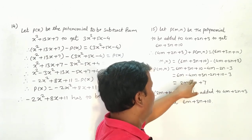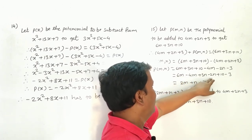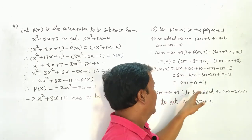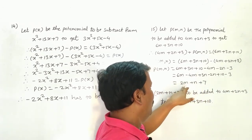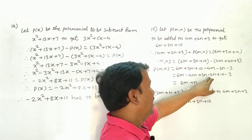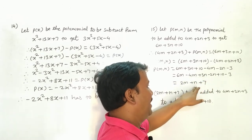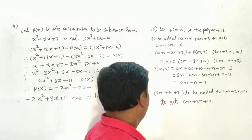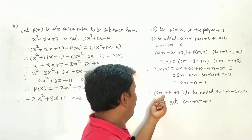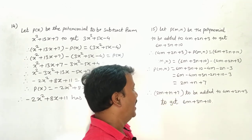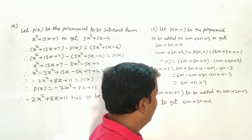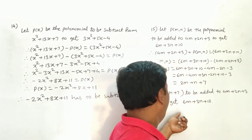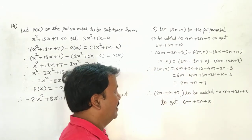Collecting like terms: 6m² - 4m² = 2m², and 3m - 2m = m, and 10 - 3 = 7. Therefore, p(m) = 2m² + m + 7 is to be added to 4m² + 2m + 3 to get 6m² + 3m + 10.